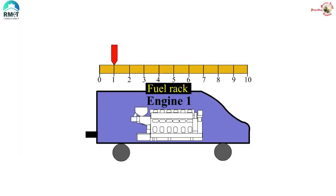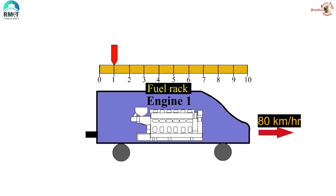What you see here is a diesel engine running at 80 kilometers per hour — obviously we need some fuel to make it run. Let's talk about the amount of fuel required in terms of fuel rack readings. For simple understanding, imagine this engine has a fuel rack with a maximum reading of 10, and it is currently running at fuel rack reading one — meaning a fuel quantity of one rack is required to run and move at 80 km/h.